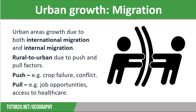Push factors are reasons for people to leave a place, such as poverty, crop failure, conflict, a lack of access to education and healthcare, or poor water or electricity supplies. Pull factors are reasons for people to move to a place and the perceived idea of a better quality of life. This might include job opportunities, better access to education and healthcare, or perhaps to join family members.